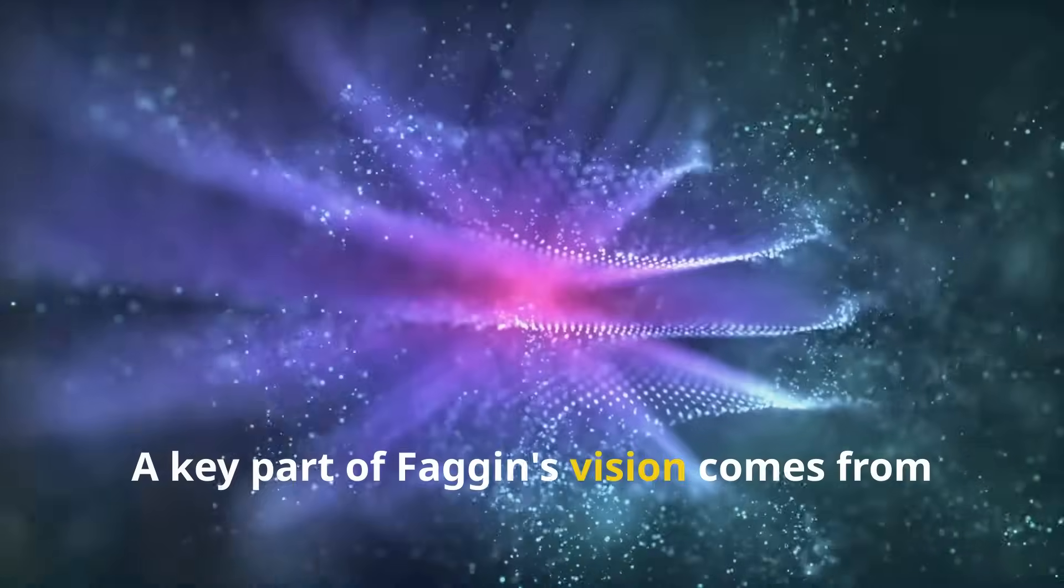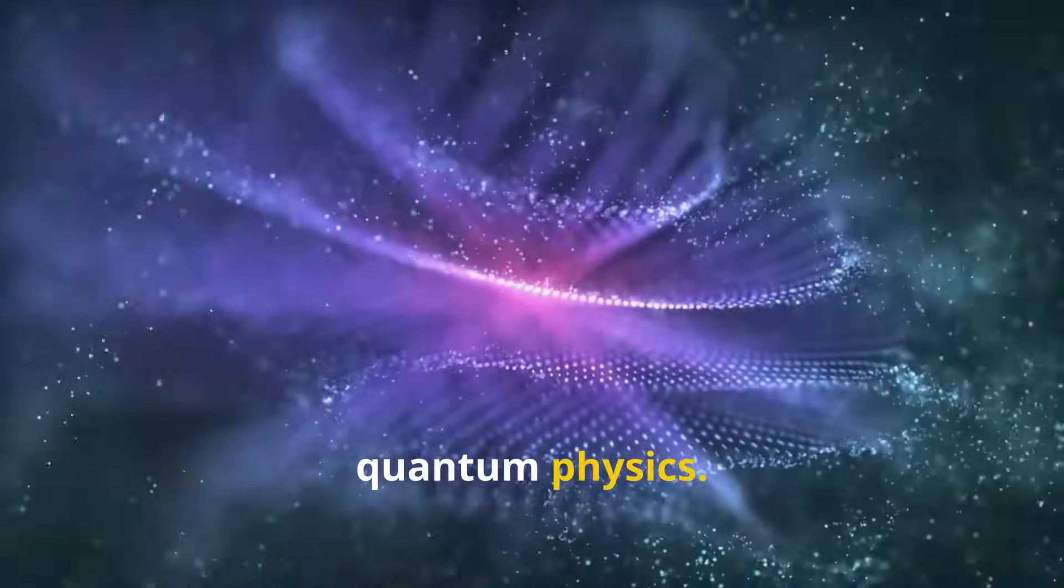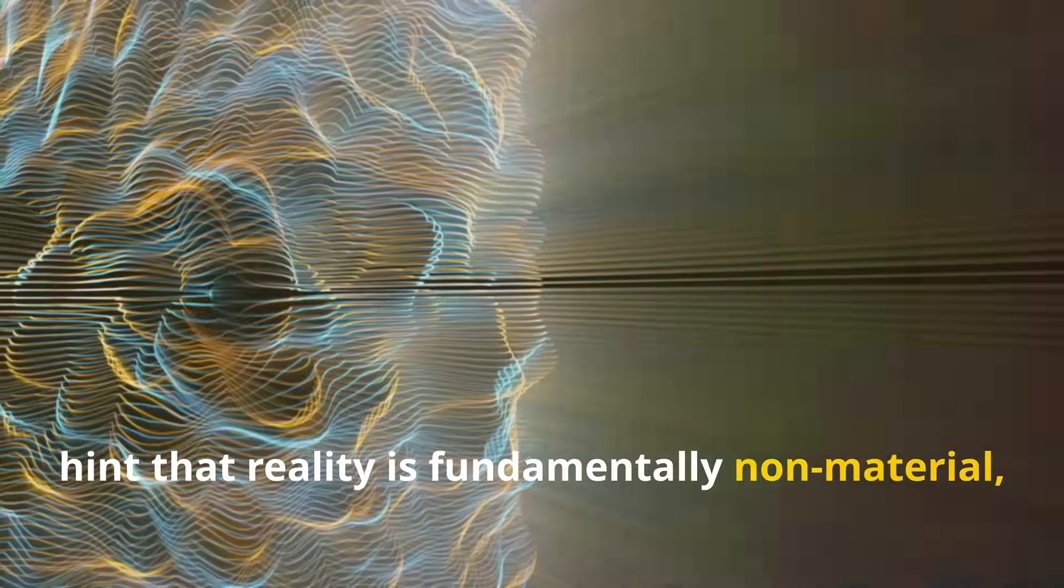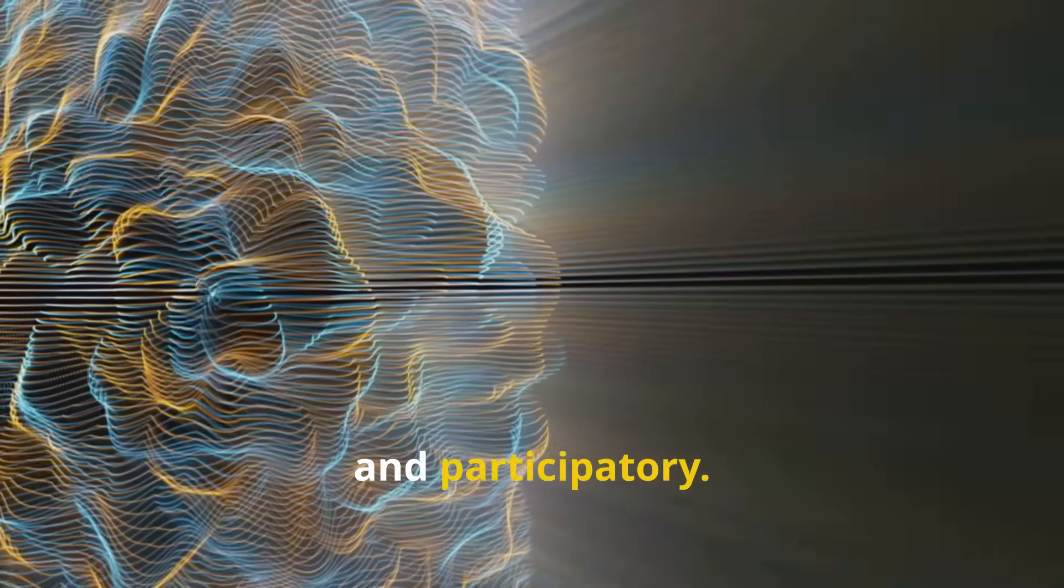A key part of Faggin's vision comes from quantum physics. Like many thinkers before him—Schrodinger, Heisenberg, Bohm—Faggin sees in quantum mechanics a hint that reality is fundamentally non-material, non-local, and participatory.